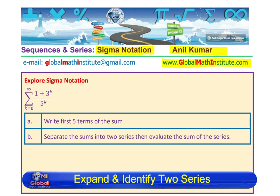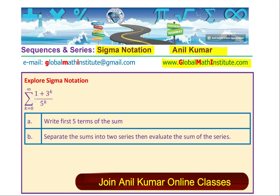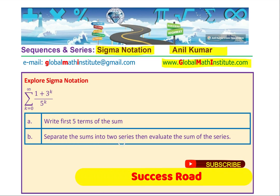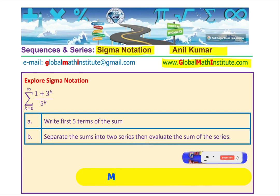The question here is, we need to find the sum of 1 plus 3 to the power of k divided by 5 to the power of k, where k goes from 0 to infinity. Part A of the question is, write first 5 terms of the sum, and B is, separate the sums into 2 series, then evaluate the sum of these series. That is the general way of solving such questions.